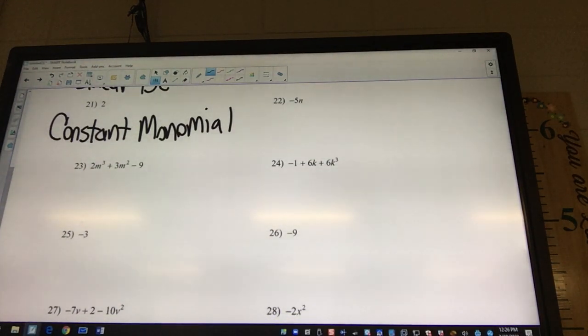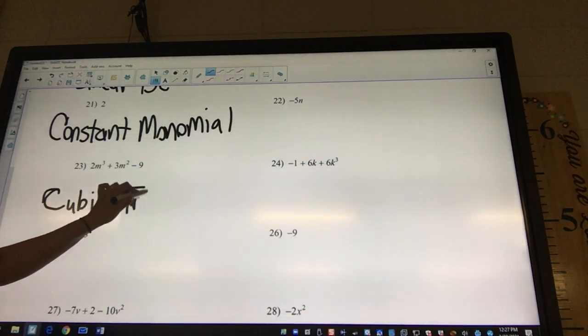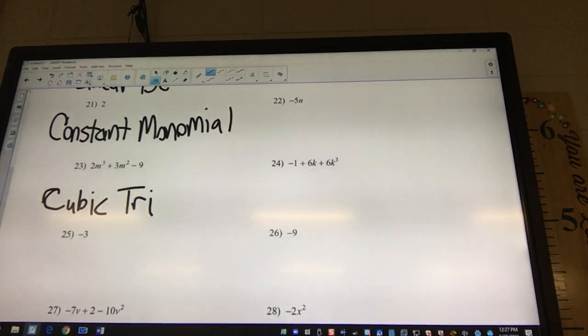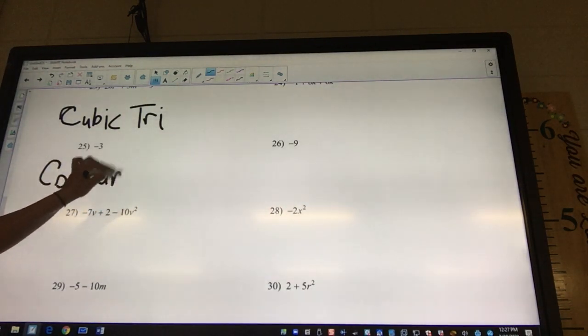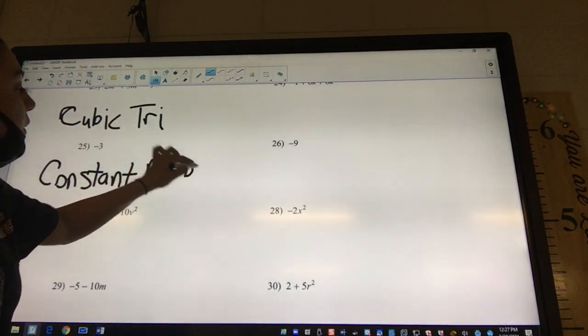Okay, 23. Is it in order? No. Oh, yes, it is. It is. Okay, so what needs to go first? Quadratic. Oh, no. 2M. It's in order. Oh, so quadratic? No. It's cubic. Cubic? Cubic. Tri. Tri. Okay, look at 25. Is it in order? Yeah. Constant. Constant. Constant. Mono. You said mono. Mono. Mono.